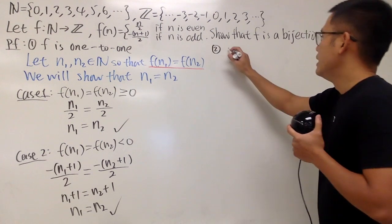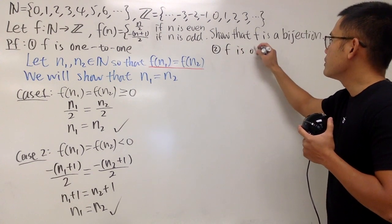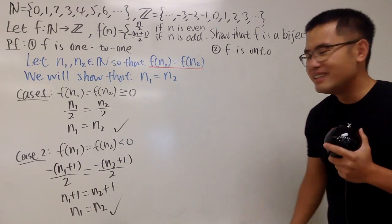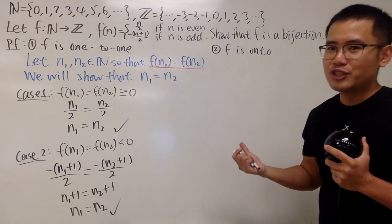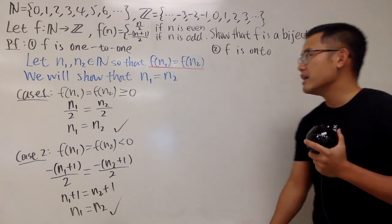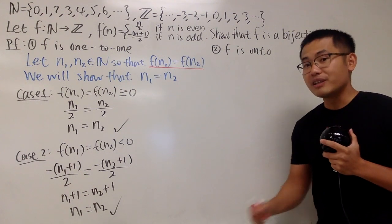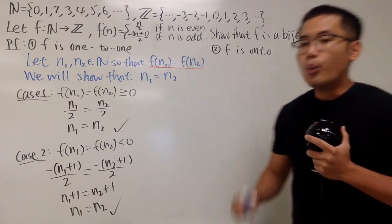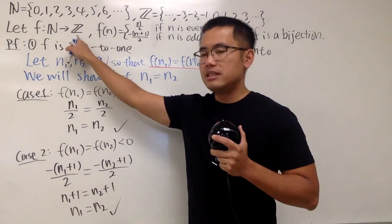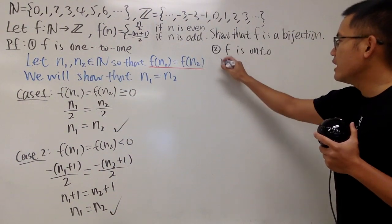Now, second part, f being onto. Now, f is onto something. Sometimes, some people will say f is surjective, meaning onto. Of course, we will have to write down the definition. So for onto, it's different than that. We will start with an element in Z. So I will just say, let, I don't want to use little z because little z is for complex numbers. So I will just use k.